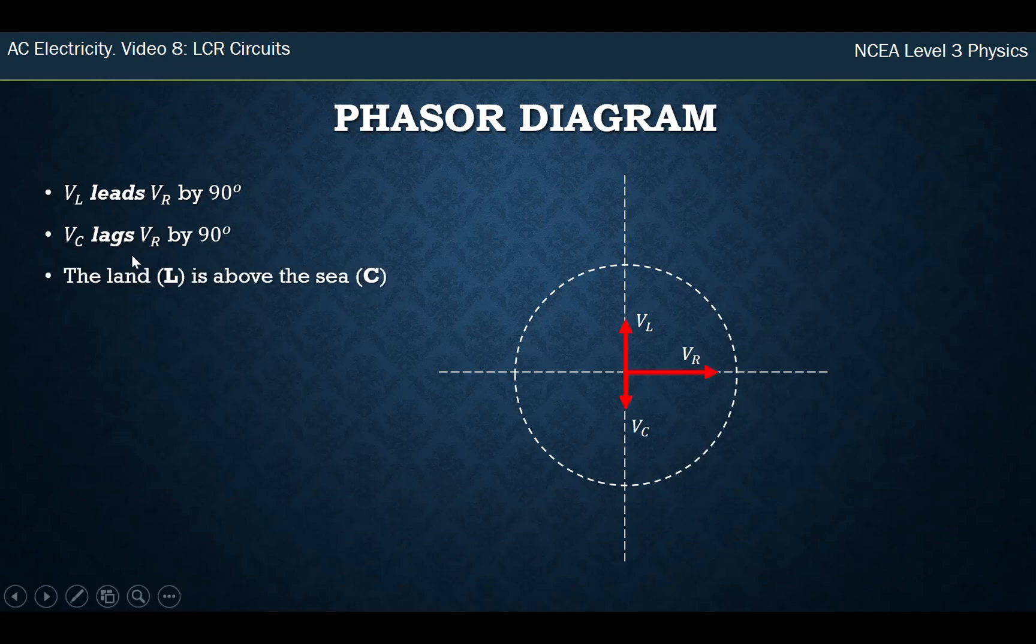The way that I was always taught to remember it, is you remember the resistor's out to the side, and the little saying, the land is above the sea. So land starts with L, so that means L points up, and C sounds like the letter C, goes down. And so that's how you remember which way around they go, the land is above the sea.